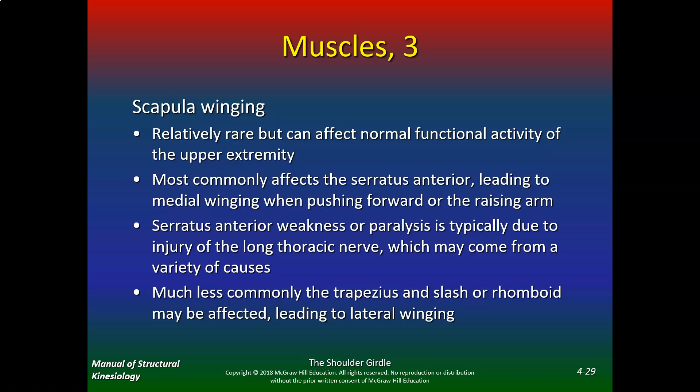Scapular winging is relatively rare but can affect normal function and activity of the upper extremity. It most commonly affects the serratus anterior, leading to medial winging when pushing forward or raising the arm. Serratus anterior weakness or paralysis is typically due to injury of the long thoracic nerve, which may result from a variety of causes. This is definitely on the quiz.